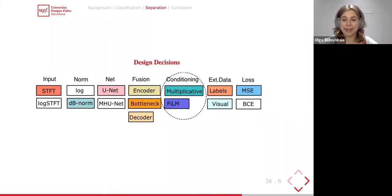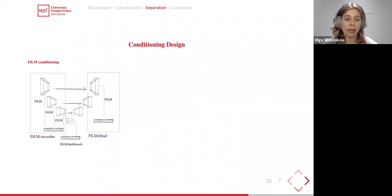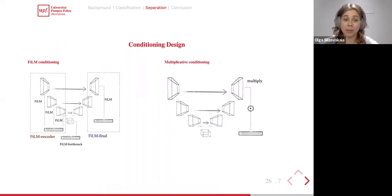Another design decision is at which stage and how to perform the conditioning. Having a baseline U-Net architecture, we perform feature-wise linear modulation (FiLM) at three stages: at the encoder (early fusion), at the bottleneck (hybrid fusion), and at the final level (late fusion). For multiplicative conditioning, we only apply it at the later stage, based on the intuition that merging high-level concepts is best done when both high-level representations are already available.